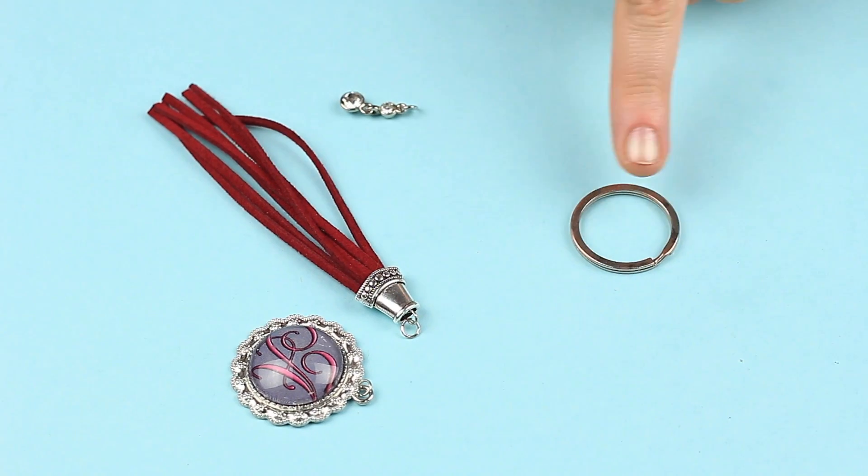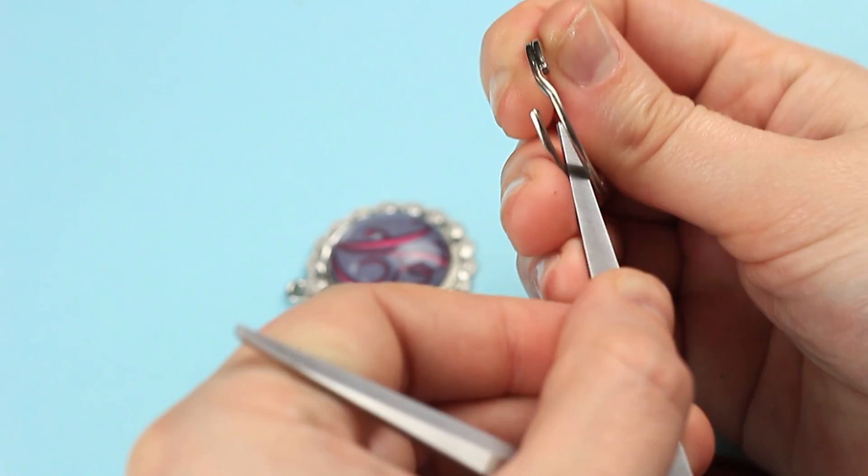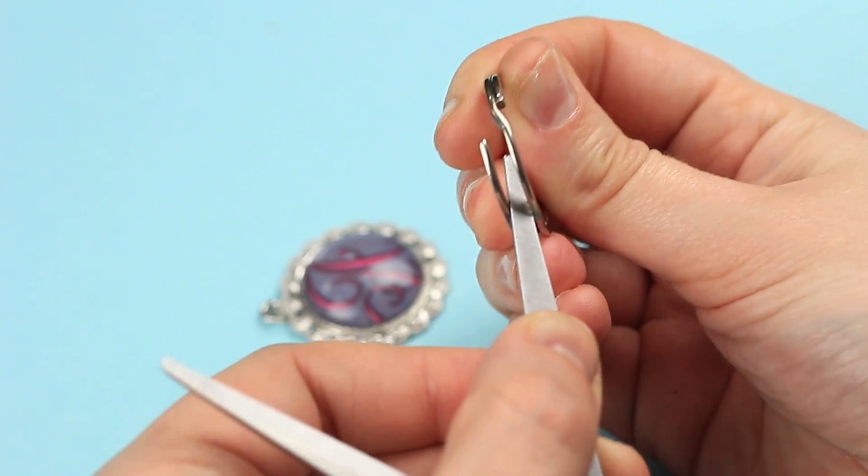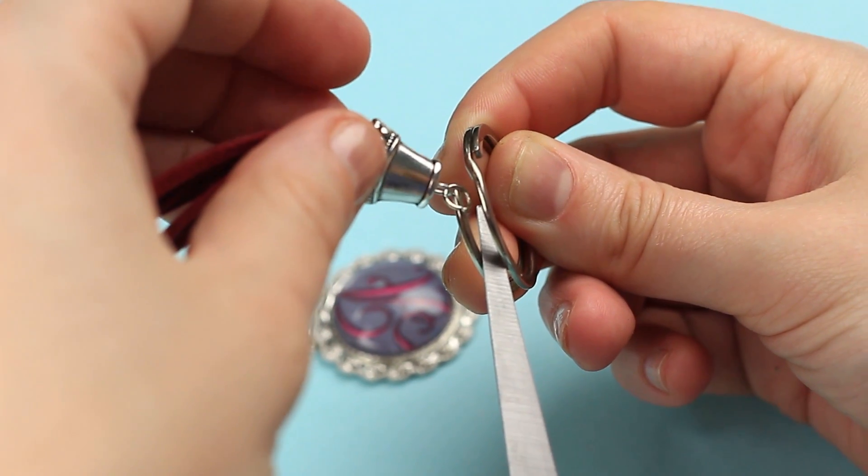Let's assemble the craft. Open a keychain ring using the sharp end of the scissors. Put on the tassel first.